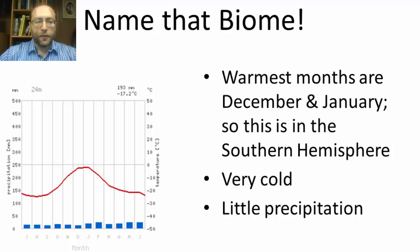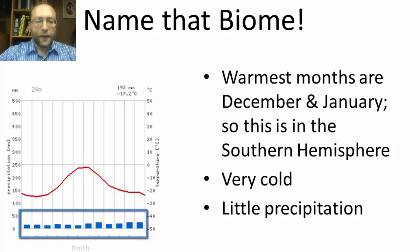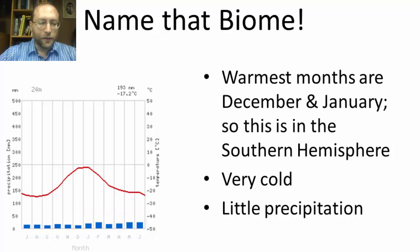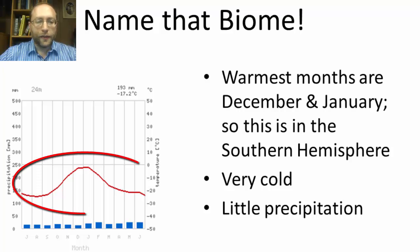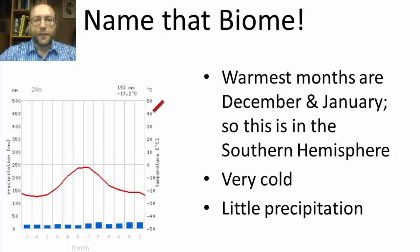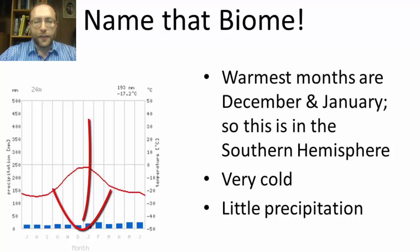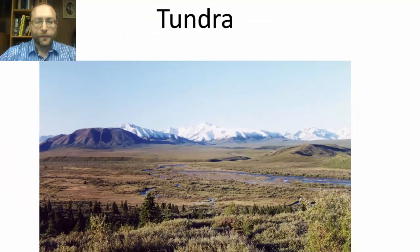Looking at this climate graph, let's first look at the precipitation — there's very, very little precipitation. The bars are small and it's pretty steady throughout the whole year. The temperature is very cold; even in the warmest months it's still below freezing. And notice that December and January are the warmest months, which means this is actually in the southern hemisphere. So what kind of biome is this, where there's very little precipitation and it's very cold throughout the year? Tundra.